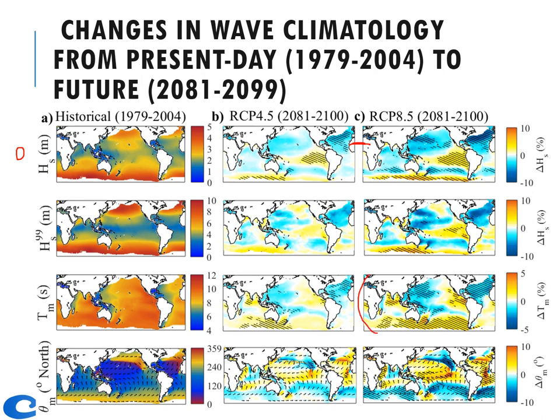For mean significant wave period change, the spatial distribution is quite different from mean wave height change in the Pacific Ocean and other ocean basins. The bottom right panel indicates future changes in mean wave direction, which is very complicated. Spatial distribution depends on the location. Future changes in mean wave direction can be projected up to plus or minus 15 degrees, depending on the location.